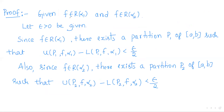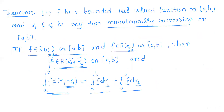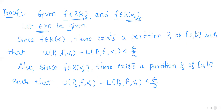Now we shall prove this. Given: f is Riemann-Stieltjes integrable with respect to α₁ and with respect to monotonically increasing function α₂. To prove f is Riemann-Stieltjes integrable with respect to α₁ + α₂, we shall follow the Riemann criterion for integrability. For every epsilon we shall find a partition, so let ε > 0 be given.